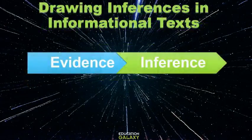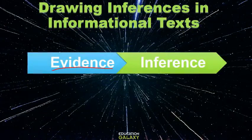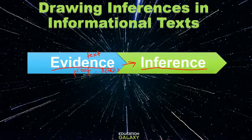Here we have a graphic organizer. It says evidence and inference. Evidence is what is in the text — it means proof. So we look at details, and then we use them to make the conclusion or the guess.